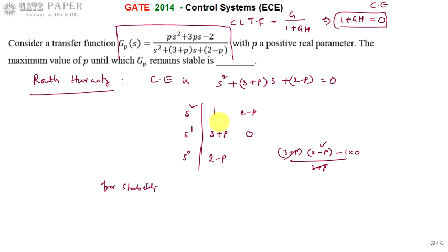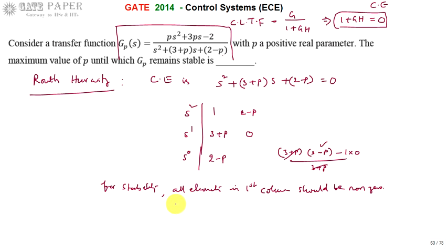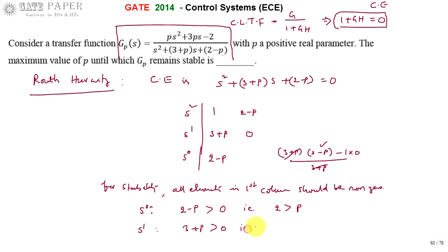For stability, all elements in the first column of the Routh array should be nonzero and positive. From the s⁰ row, (2 − p) must be greater than 0, which means p must be less than 2. From the s¹ row, (3 + p) must be greater than 0, which means p must be greater than −3.